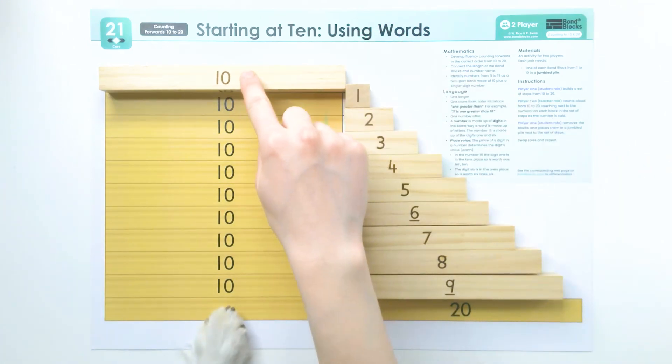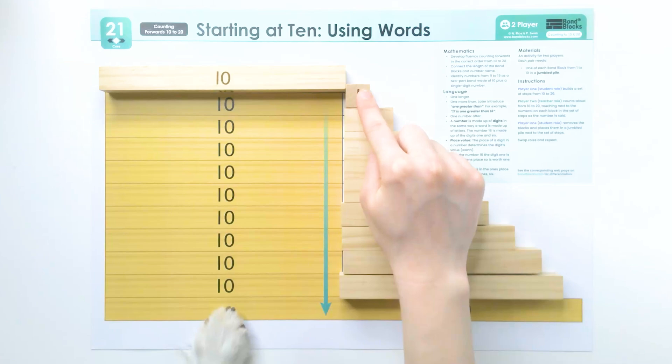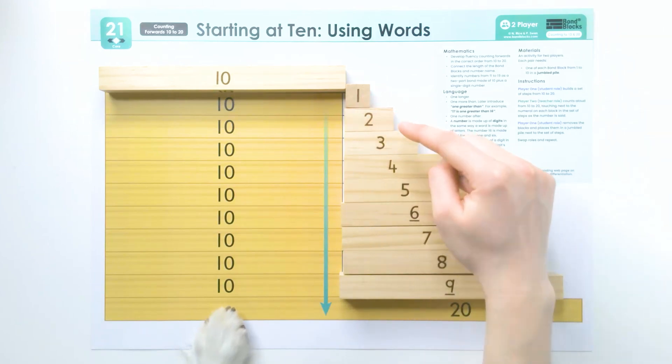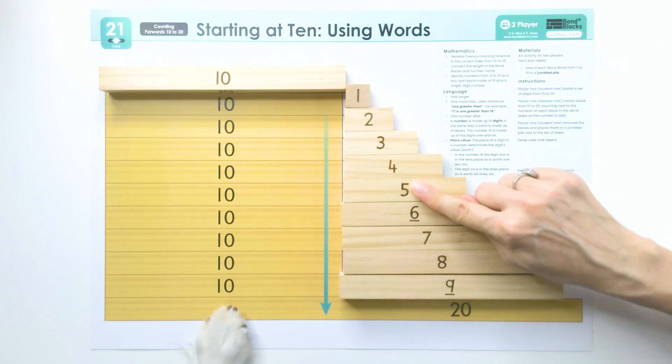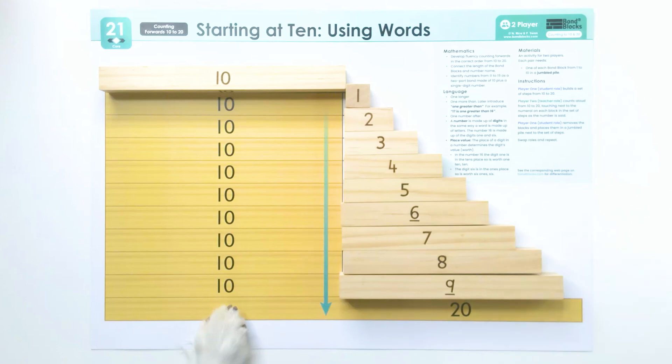10, 11, 12, 13, 14, 15, 16, 17, 18, 19, 20. Well done, Karis and Lumi. You said your N at the end very well and pointed touching next to the number on the block. Now it's your turn. Bye!